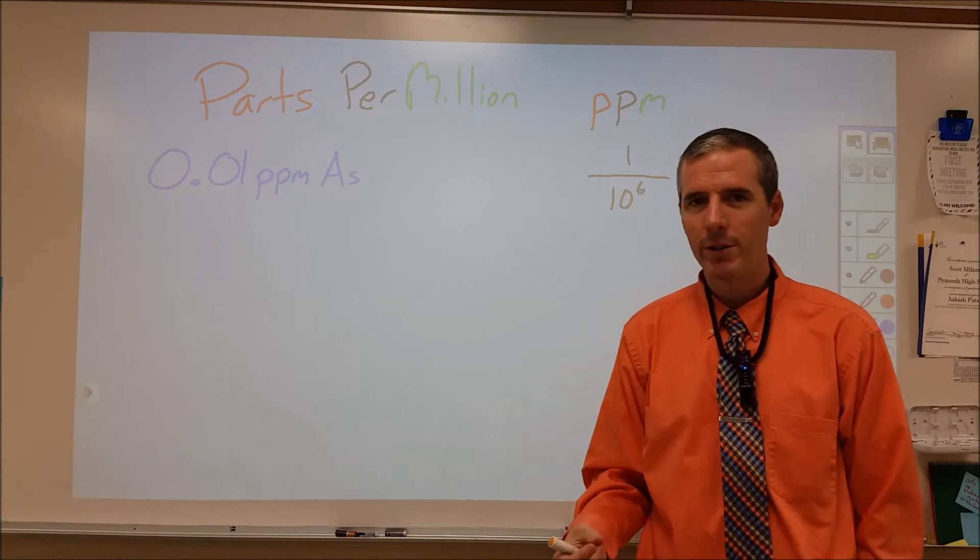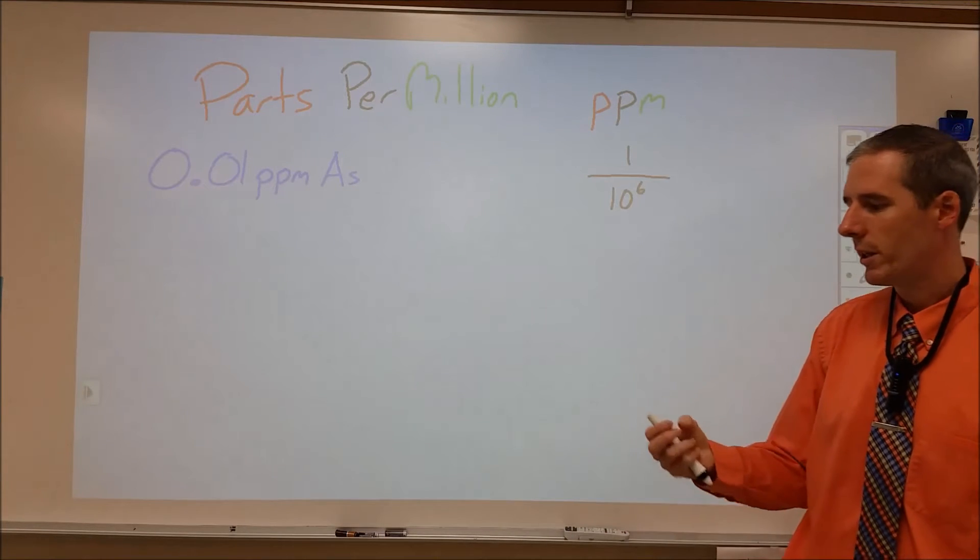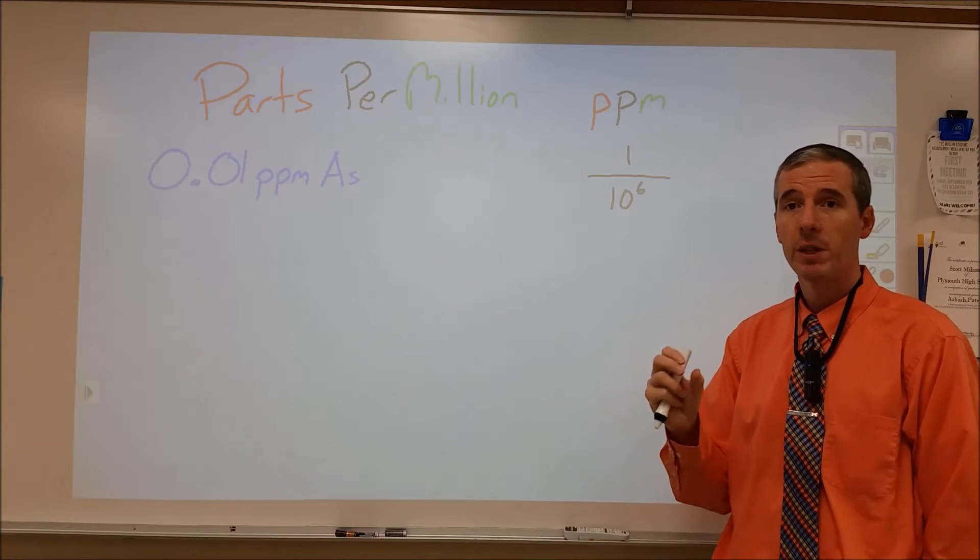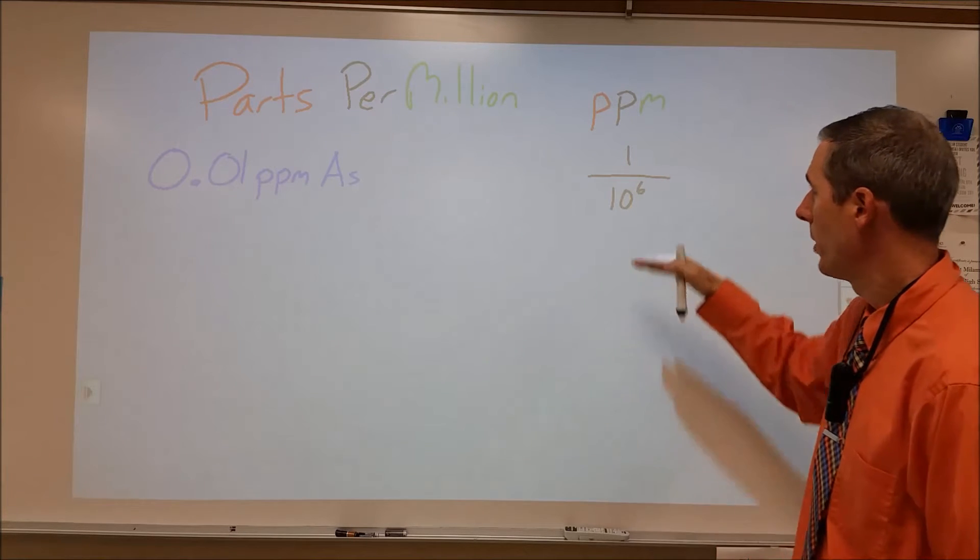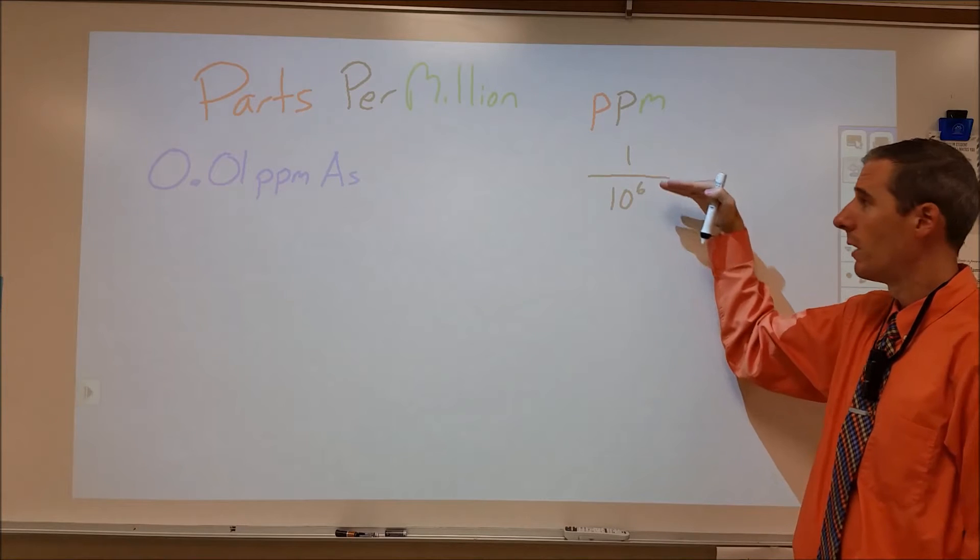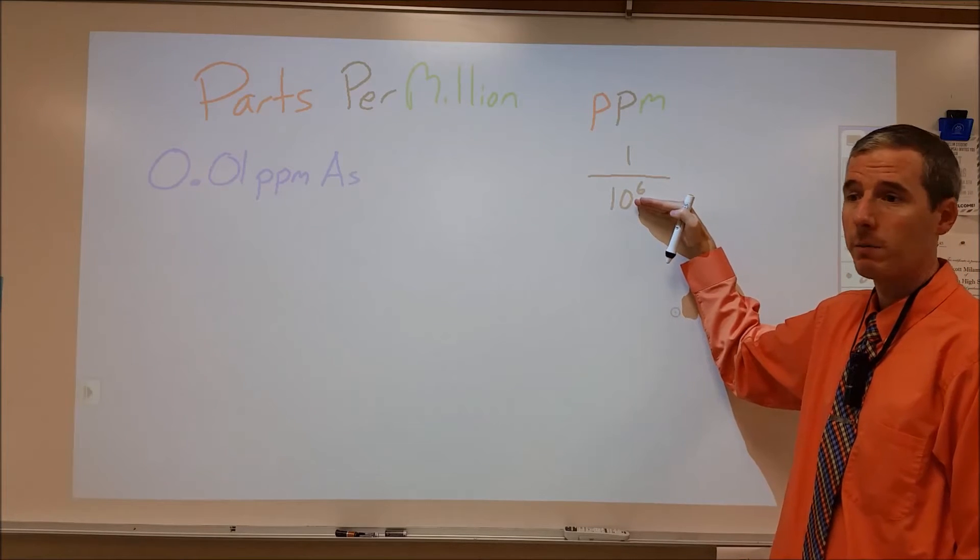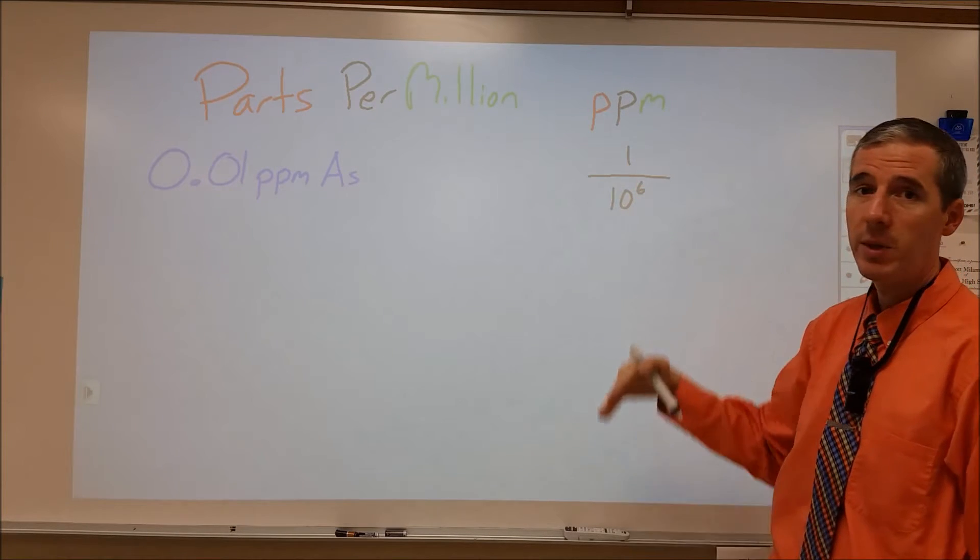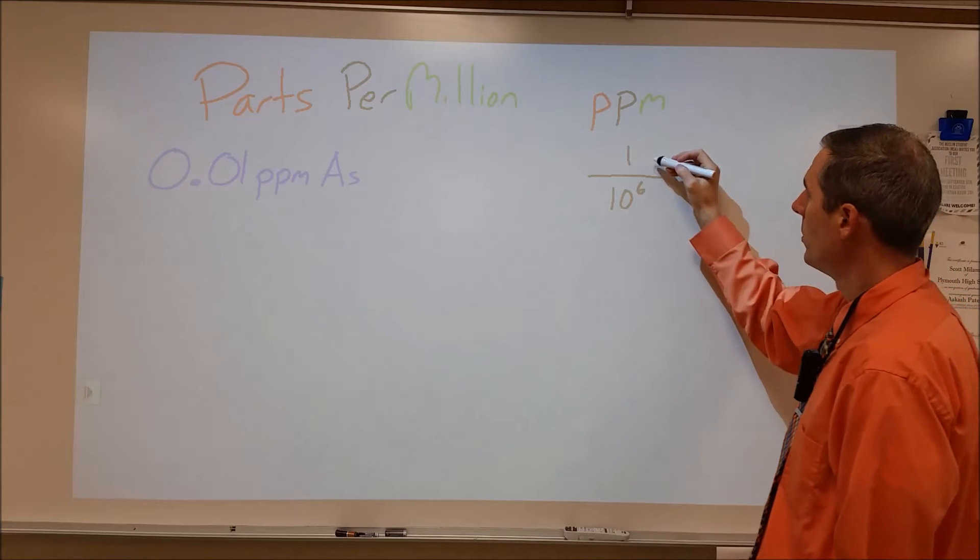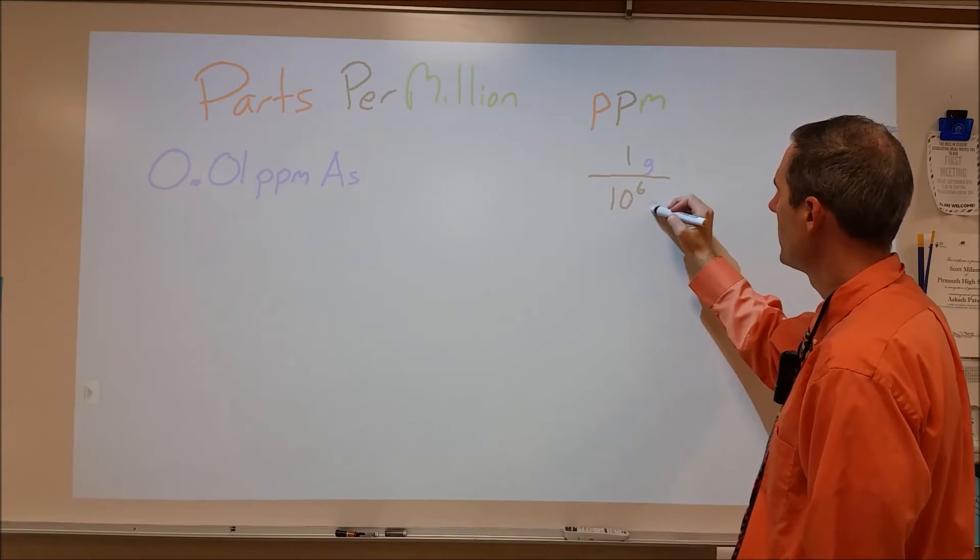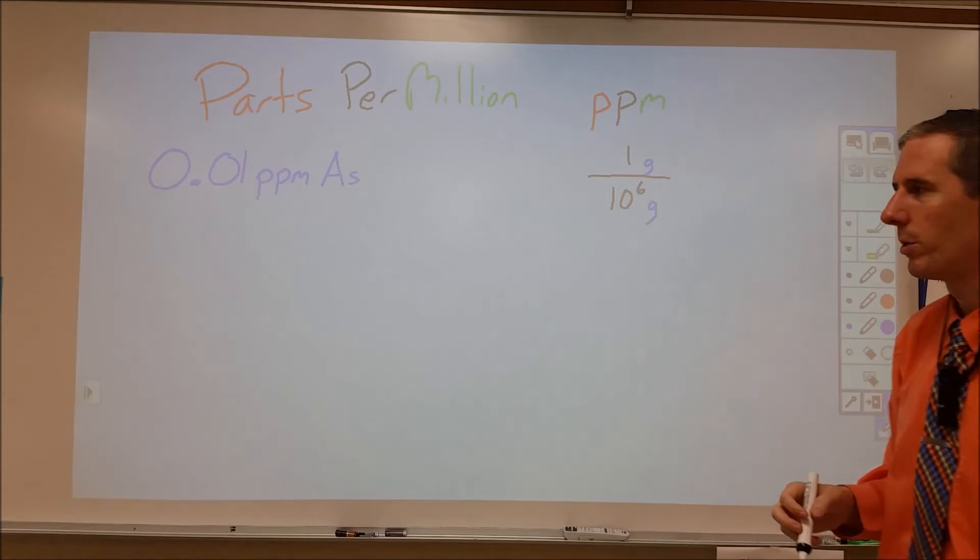Parts per million is a unit of concentration we can use for something that's really diluted. A part per million is defined as having one of something per million of something. Usually we see it used as one gram of substance in one million grams of solution.